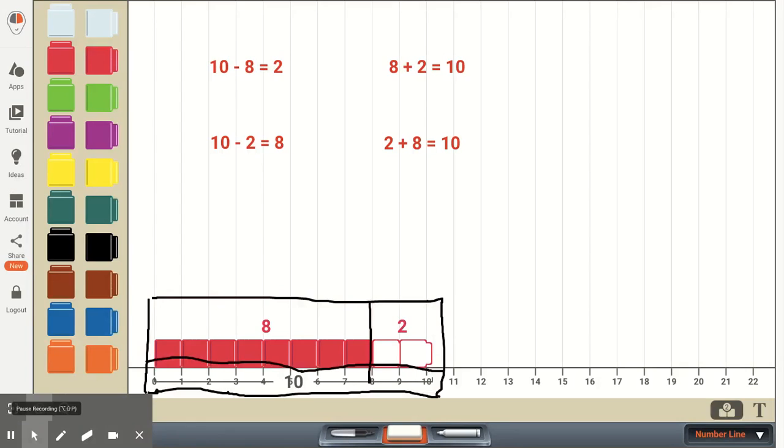Other students may use something that's called part-part-whole. So if we look here, we have three boxes. On the top, we have two parts. We have the 8 and the 10. When we put the two parts together, when we add them, when we join them, 8 plus 2 would be equal to 10.